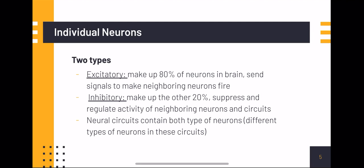When talking about individual neurons, there are two types: a neuron is either excitatory or inhibitory. 80% of the neurons in our brain are excitatory, and they send signals to make neighboring neurons fire. Inhibitory neurons make up the other 20%, and they suppress and regulate activity of neighboring neurons in neural circuits. Neural circuits contain both types of neurons — excitatory and inhibitory — and they also have different types of neurons within these circuits with different functions.